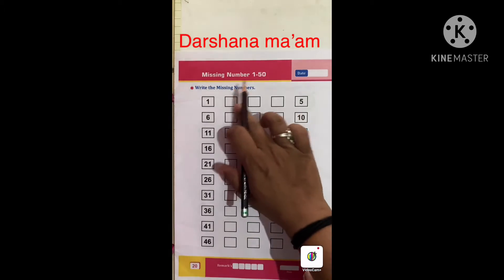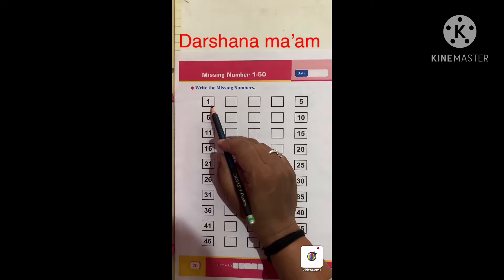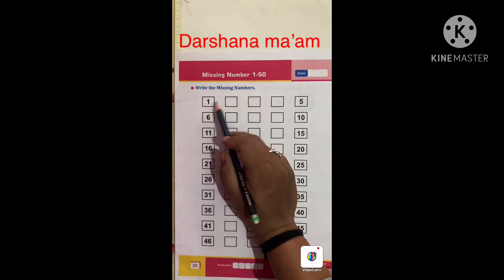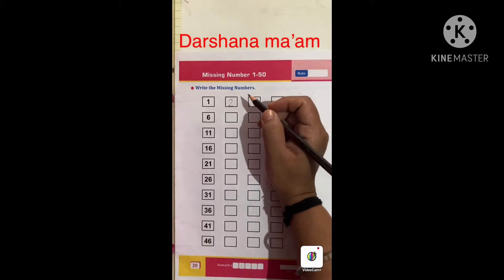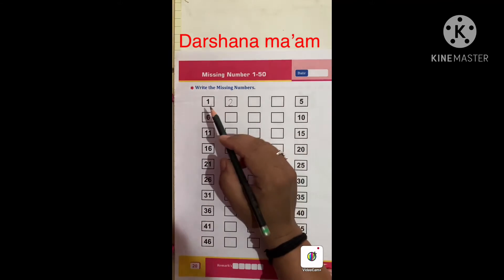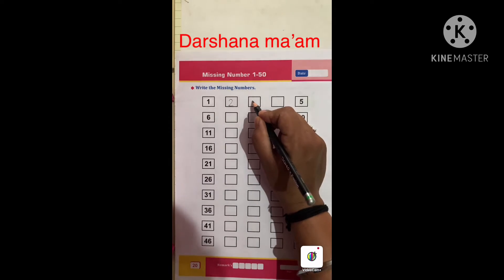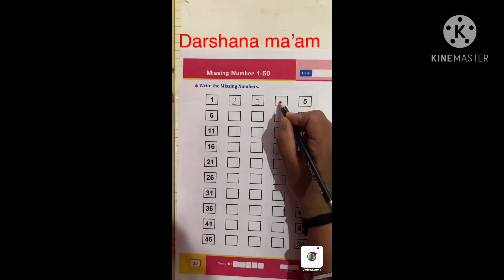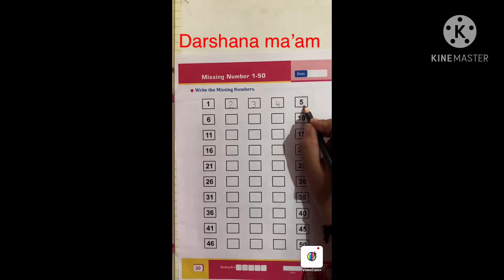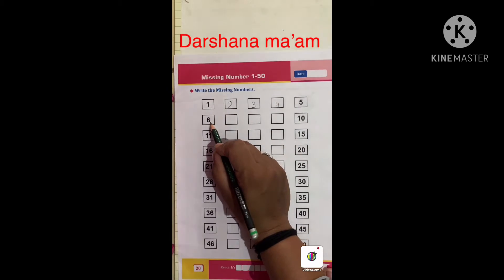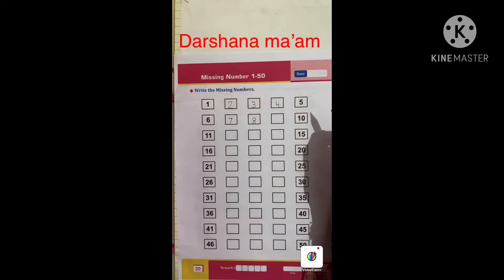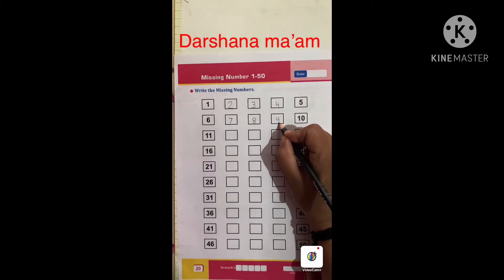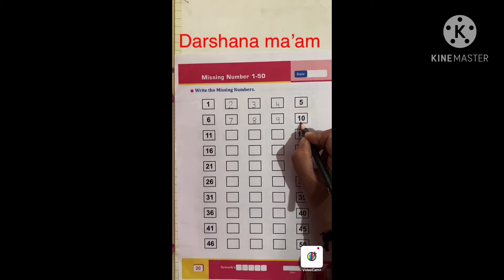Now we write the missing numbers. The first number given is number one. One ke baad konsa number aega? Two. Numbers — speak and write. One, two, two after three, three, four and five, six, seven, seven after eight, eight after nine, nine after ten — one zero, ten.